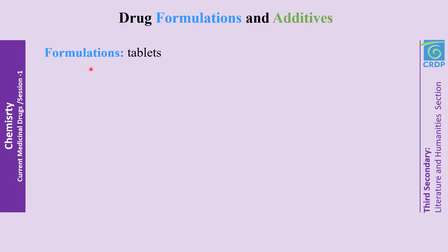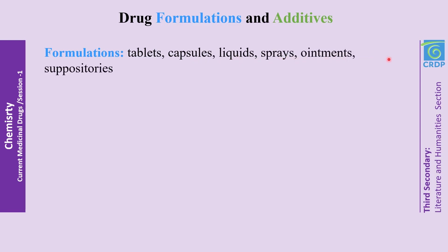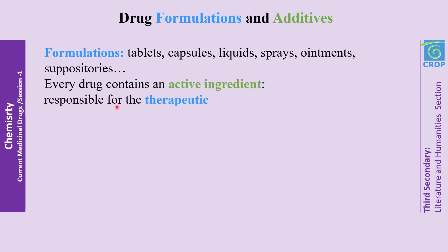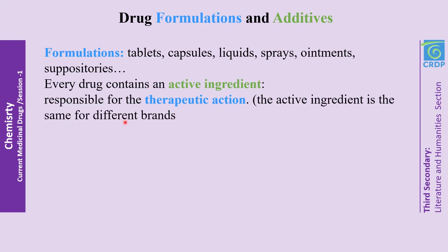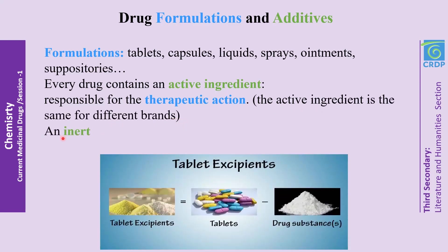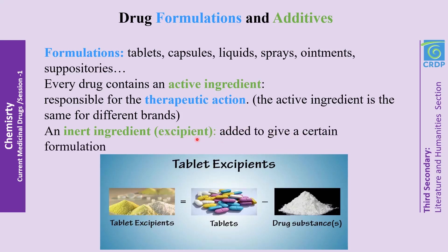Tablets, capsules, liquids, sprays, ointments, and suppositories are clear examples of drug formulations. Every drug contains an active ingredient which is responsible for the therapeutic action. The active ingredient is the same for different brands. An inert ingredient, called the excipient or drug additive, is added to give a certain formulation.